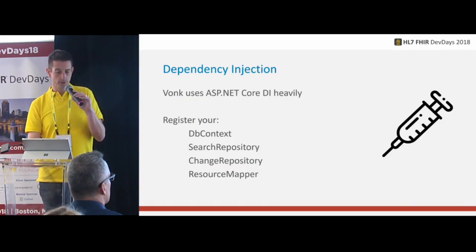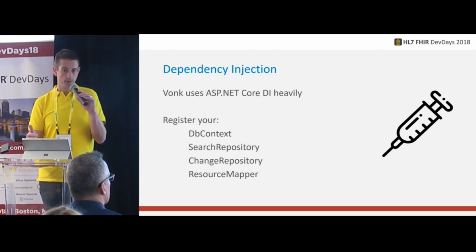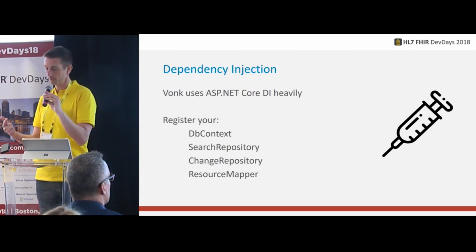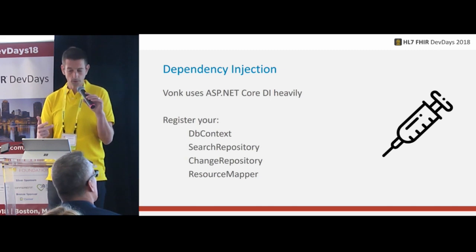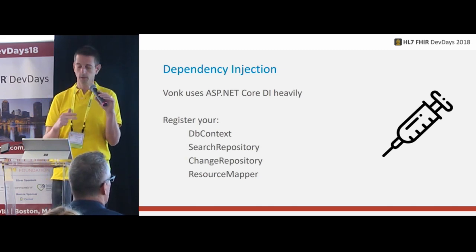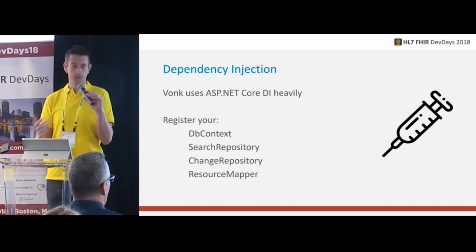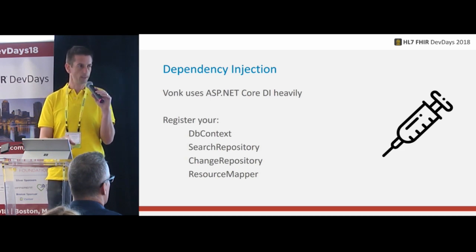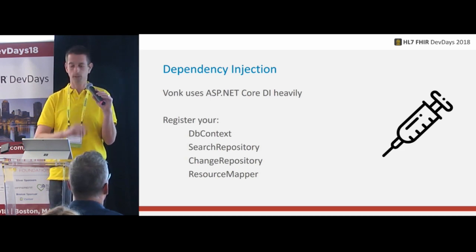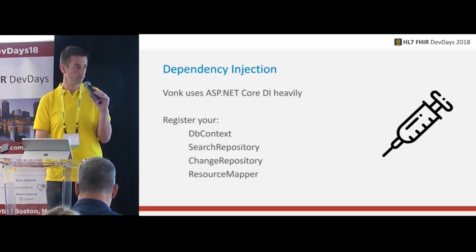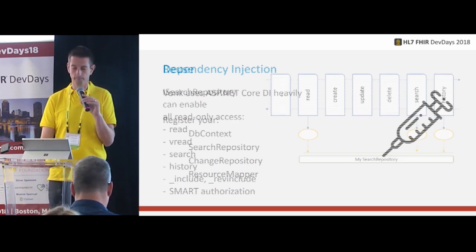What you need to register in dependency injection: the DB context (to reach your database), the search repository you implemented, the change repository if you use that for writing, and the resource mapper. Query factories are created automatically so you don't need to register them.